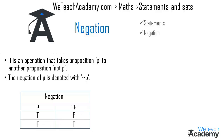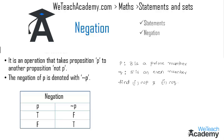Now let me explain this concept with the help of an example. Here we have the statement p as '3 is a prime number' and q as '5 is an even number', and we have to find not p and not q.